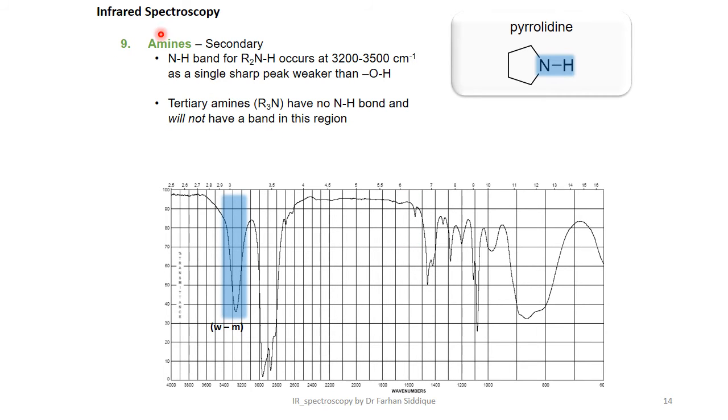In amines we can see a band between 3200 to 3500 cm⁻¹. Tertiary amines have no N-H bond and will not have a band in this region.